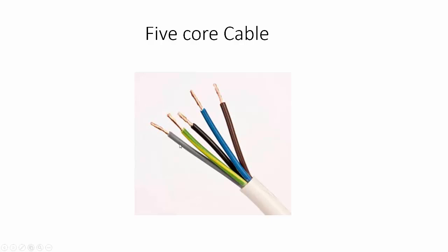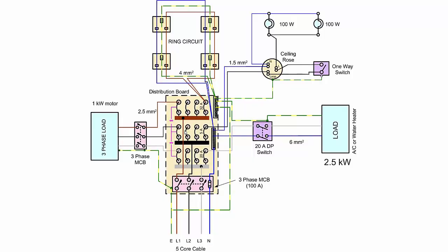Coming back to this cable, you can see there are three phases denoted by the colors brown, black, and gray for the three phases L1, L2, and L3. Blue is for the neutral wire, and green-and-yellow wire is for the earth wire.